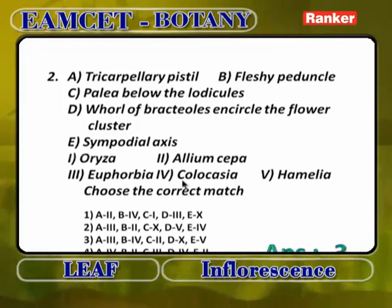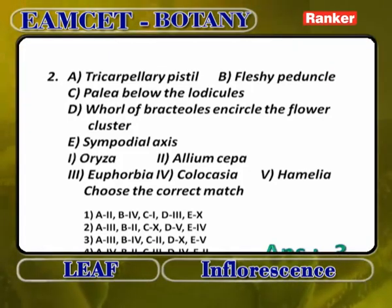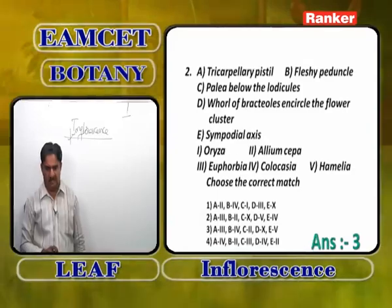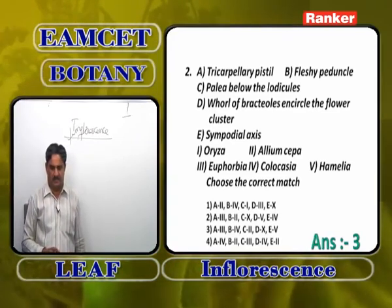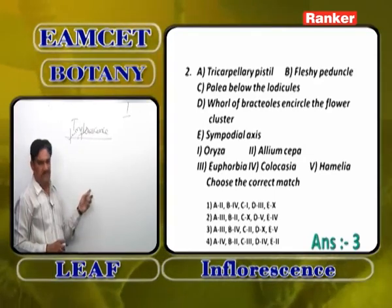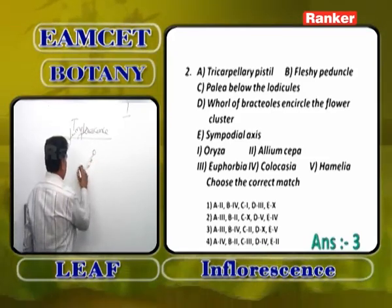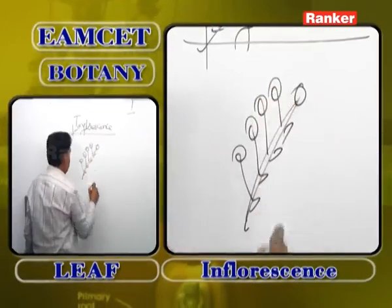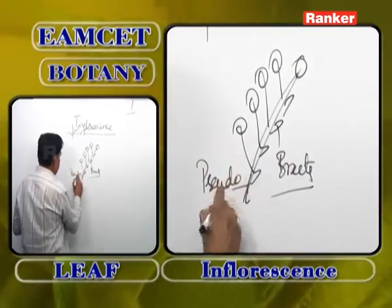Palea below the lodicules (C) is found in Allium (2) — Allium cepa. Whorls of bracteoles encircling the flower cluster (D) is found in Heliotrope and Allium cepa. Sympodial axis (E) is found in Heliotrope — the inflorescence is monochasial helicoid cyme, where the peduncle grows definitely and ends as a flower; from the lower side, flowers are produced in a spiral manner, but opposite to the bracts, forming a pseudo-axis rather than a real axis.